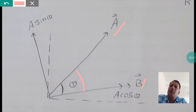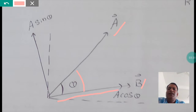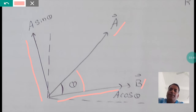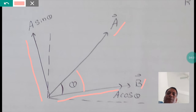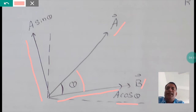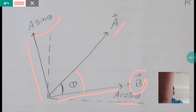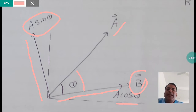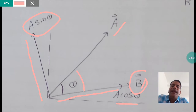I am resolving vector A into two components — the component along B is A cos theta (parallel to B), and the other component is A sin theta (perpendicular to B). When we take the dot product, we multiply the parallel components: B with A cos theta, so dot product becomes AB cos theta. When we take the cross product, we multiply the perpendicular components: B with A sin theta, so the vector product becomes AB sin theta. This is the key difference — dot product uses parallel components, cross product uses perpendicular components.